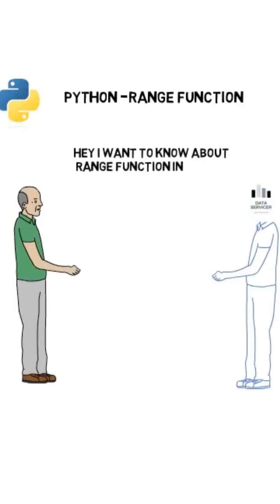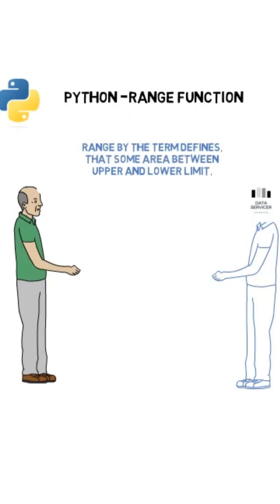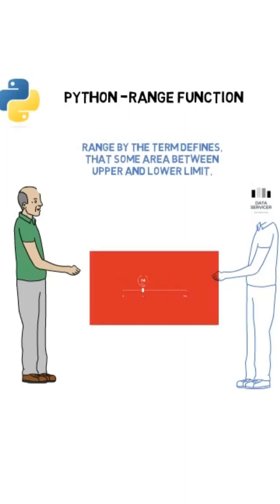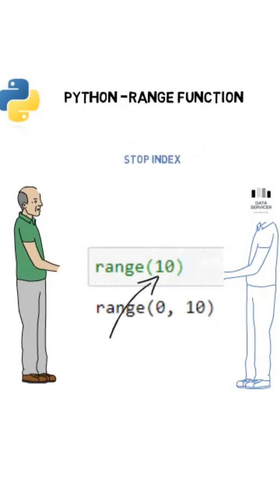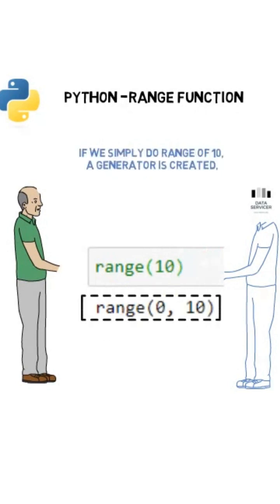Hey, I want to know about the range function in Python. Yeah, sure. Range by the term defines some area between upper and lower limits. By default, range takes a single argument, and that argument is the stop index of the inputted number. If we simply do range(10), a generator is created.